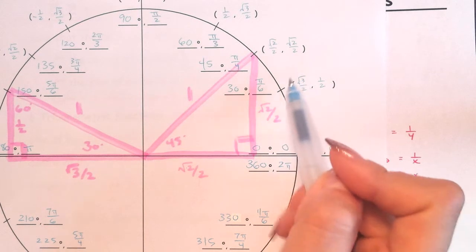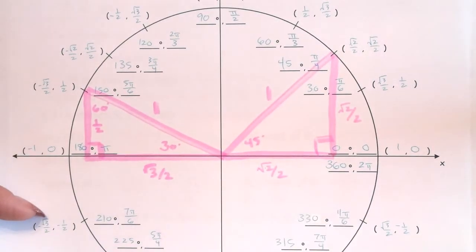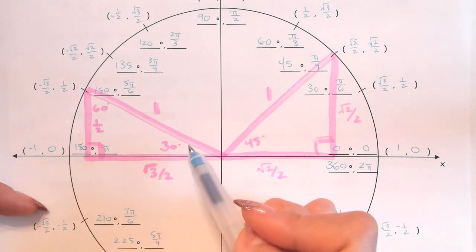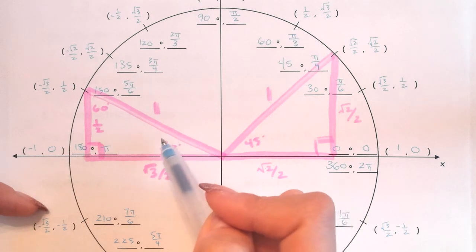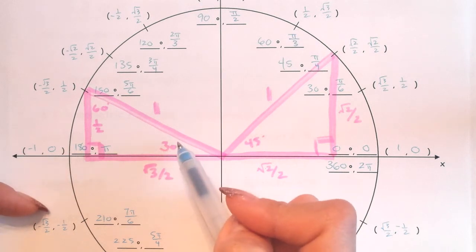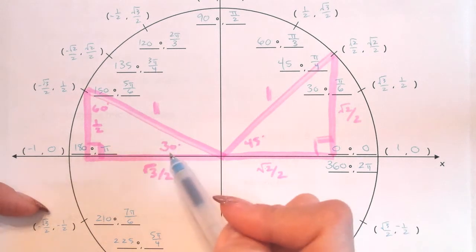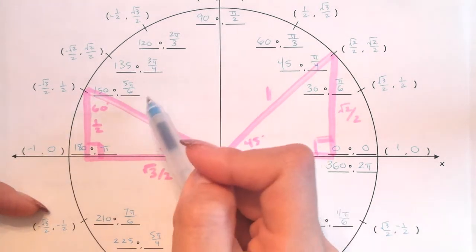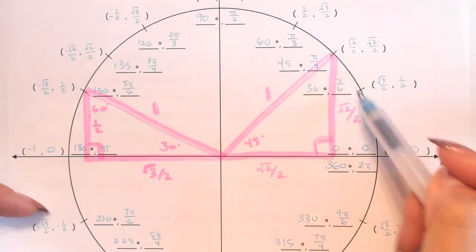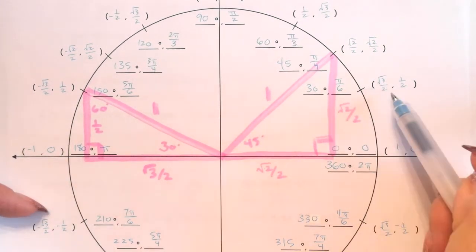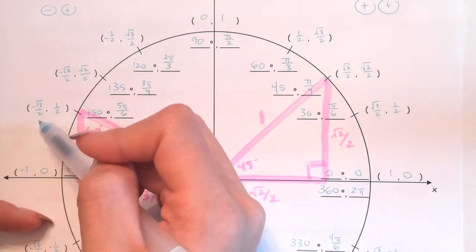Why is it the x value of that coordinate? SOH-CAH-TOA says cosine of 30 degrees should be adjacent over hypotenuse — so root 3 over 2 over 1, which is root 3 over 2. Look, it's the x value of that coordinate. Cosine will always be the x value of all of those coordinates.